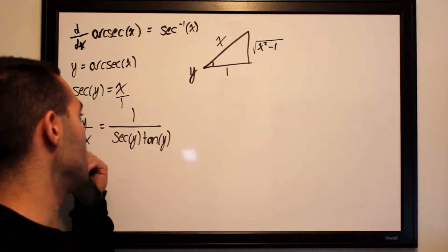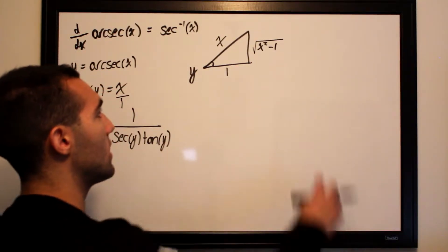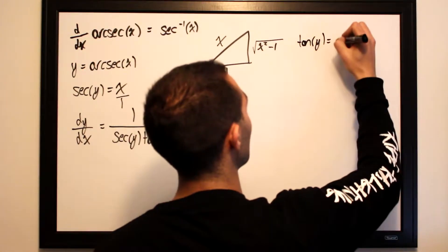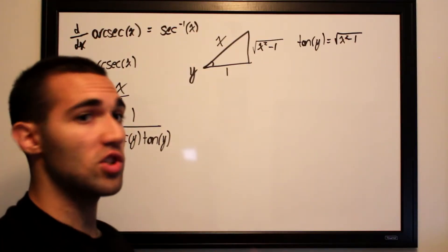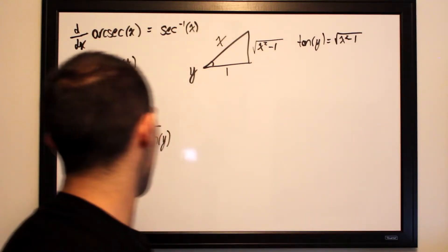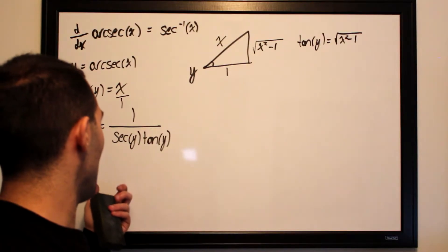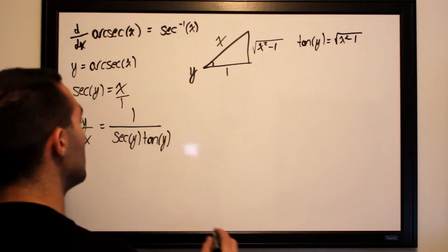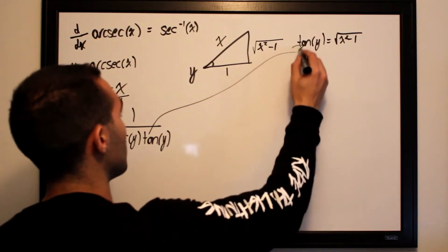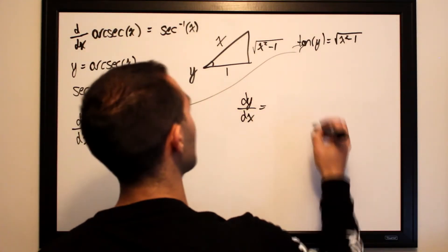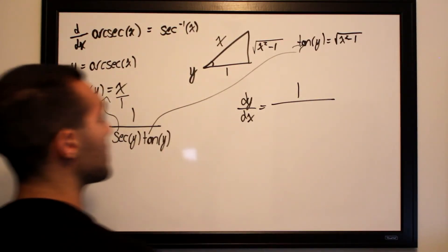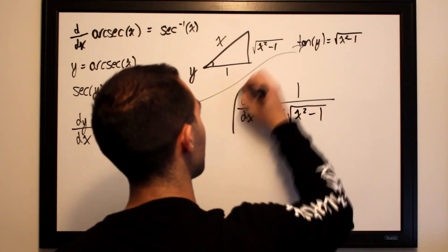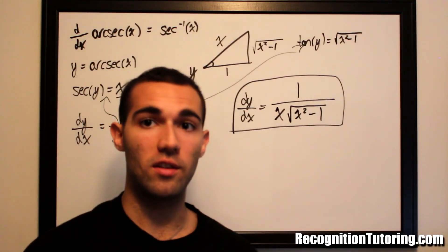We already know secant of y equals x. For tangent of y, which is opposite over adjacent, tangent of y equals the square root of x squared minus one. Substituting both back into our expression, dy/dx equals one over x times the square root of x squared minus one. And that is our derivative using implicit differentiation for arc secant of x.